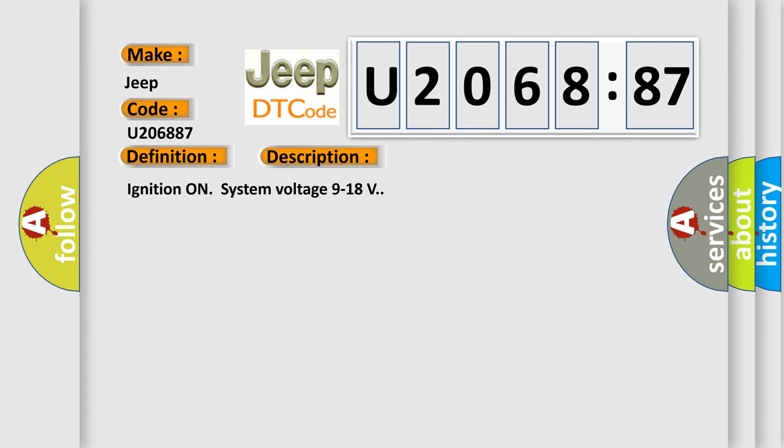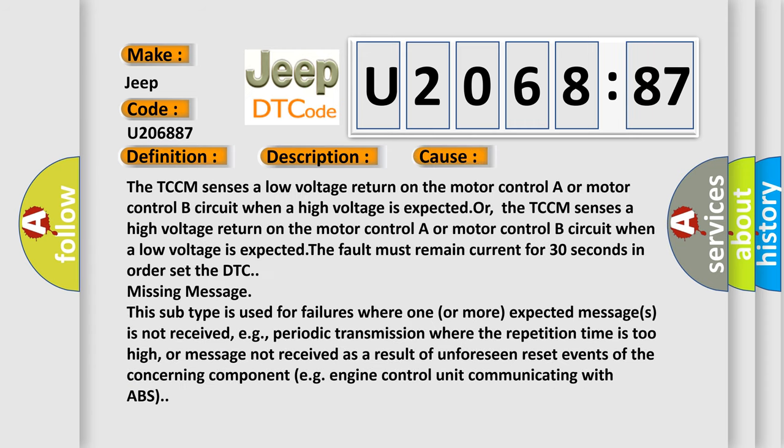This diagnostic error occurs most often in these cases: The TCCM senses a low voltage return on the motor control A or motor control B circuit when a high voltage is expected, or the TCCM senses a high voltage return on the motor control A or motor control B circuit when a low voltage is expected. The fault must remain current for 30 seconds in order to set the DTC. Missing message: This subtype is used for failures where one or more expected messages is not received, for example, periodic transmission where the repetition time is too high, or message not received as a result of unforeseen reset events of the concerning component, e.g., engine control unit communicating with ABS.